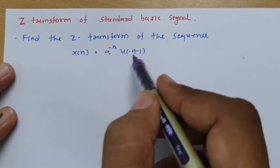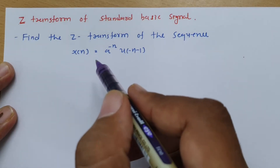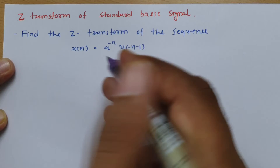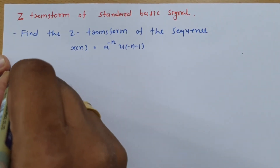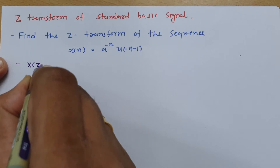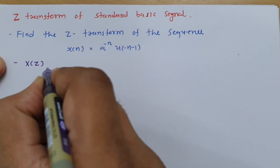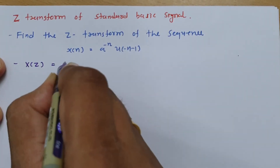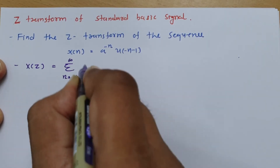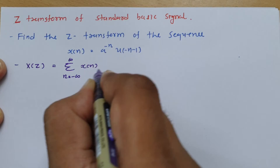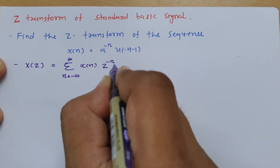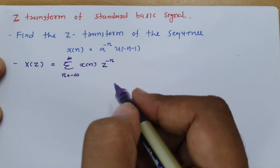This is a standard basic signal and we need to identify its Z-transform. As we know, for calculation of Z-transform, X(z) is identified by the summation from n = -∞ to ∞ of x(n) · z^(-n). This is the basic formula that we have.